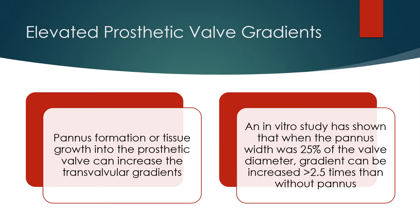Pannus formation, or tissue growth into the prosthetic valve, can increase the trans-valvular gradients. An in vitro study has shown that when the pannus width was 25% of the valve diameter, the gradient can be increased more than 2.5 times compared to without pannus.